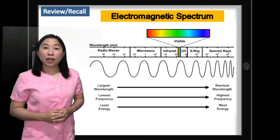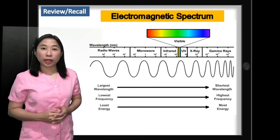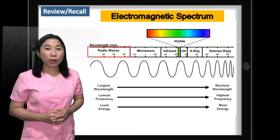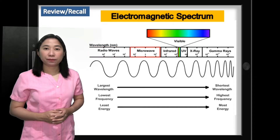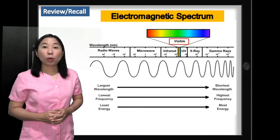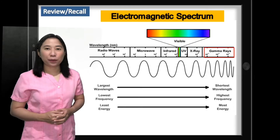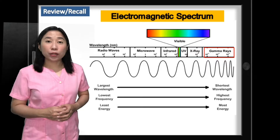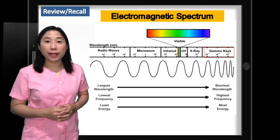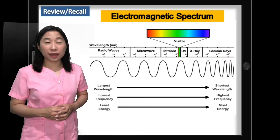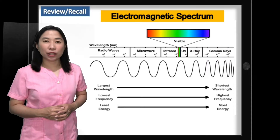There are seven known EM waves. These are radio waves, microwaves, infrared, visible light, ultraviolet, x-ray, and gamma rays. These EM waves are arranged in the electromagnetic spectrum based on their wavelength, frequency, and energy.